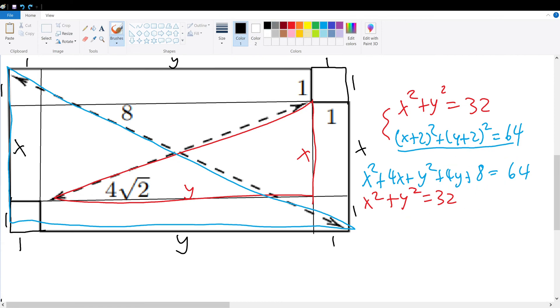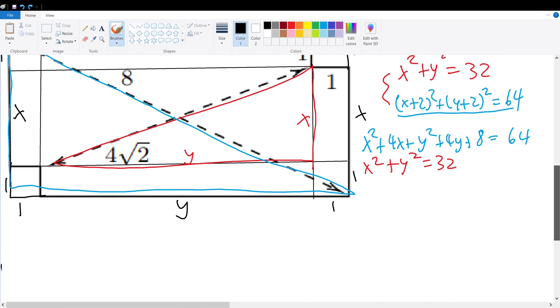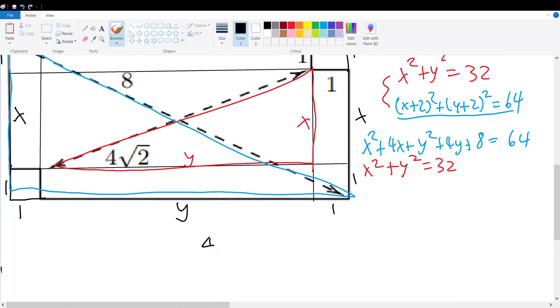That would be 4x + 4y + 8 = 32. Therefore, x + y + 2 = 8. Therefore, x + y = 6.